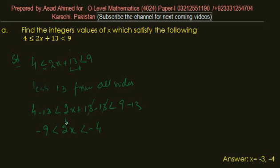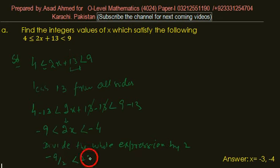Now we have to remove 2. In order to remove 2, we have to divide the whole expression by 2. So it is -9/2, 2x/2, and -4/2.